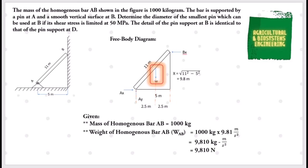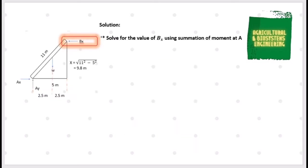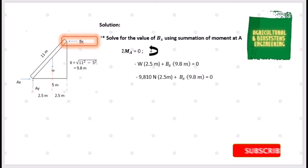After identifying the given, we can go directly to our solution. From our free body diagram, the first value we are going to solve is Bx. To solve for its value, we will use the summation of moments at point A, set equal to zero. Forces going counterclockwise are positive. We have negative weight multiplied by its distance from A of 2.5 m, added to Bx multiplied by its distance from A of 9.8 m, equal to zero.